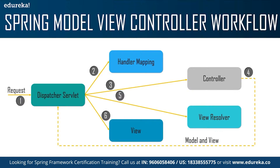The incoming requests are intercepted by the dispatcher servlet that works as a front controller. The dispatcher servlet gets an entry of handler mapping from the XML file and forwards the request to the controller. The controller returns an object of model and view, and finally the dispatcher servlet checks the entry of the view resolver in the XML file and invokes the specified view component.